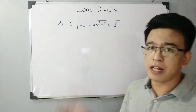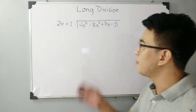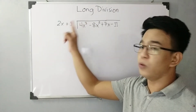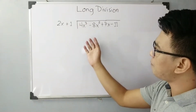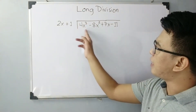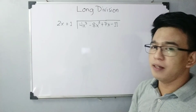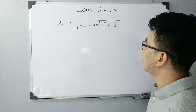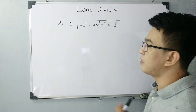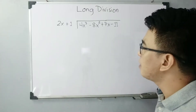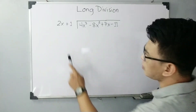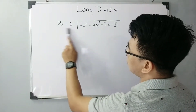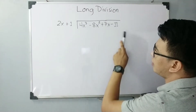So guys, we have here two different polynomials. We have the first polynomial, which is 2x plus 1. And the second polynomial is 4x cubed minus 8x squared plus 7x minus 1. Now, this is your divisor and this is your dividend.